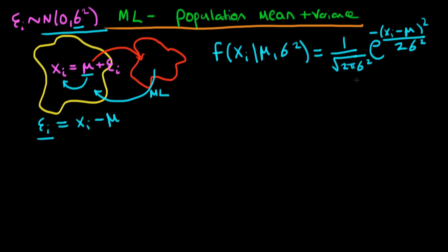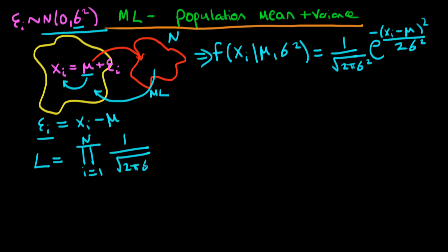That's the probability distribution for a given xᵢ, but we have a sample of n observations from the population, so we need to define the overall likelihood function for all n data points. Assuming the observations are independent, we multiply the individual likelihood functions together — giving us the product from i equals 1 to n of (1 over √(2πσ²)) times exp(−(xᵢ − μ)² / 2σ²).